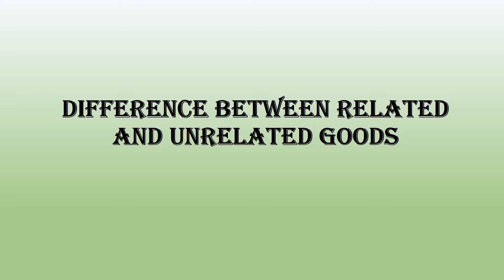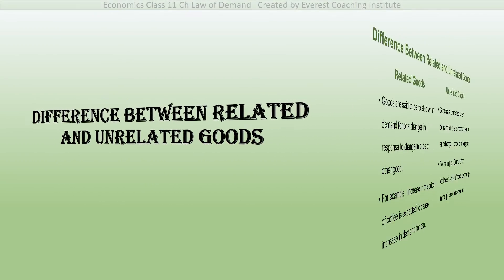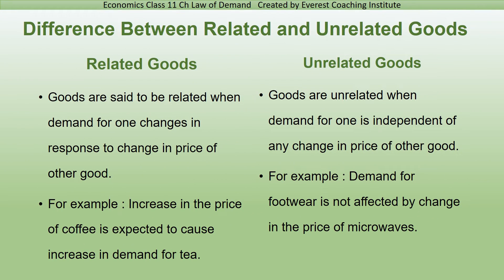Now comes the difference between related and unrelated goods. Goods are said to be related when the demand for one changes in response to a change in the price of other goods. Two goods are related when the demand for one is affected by the price of the other. This leads us to substitute goods and complementary goods.